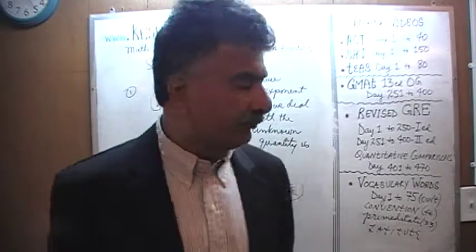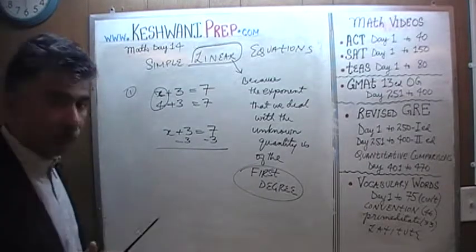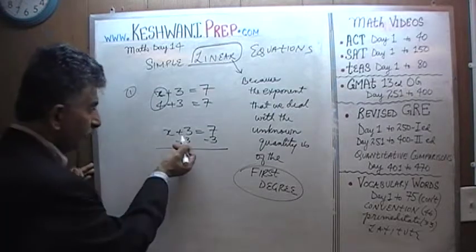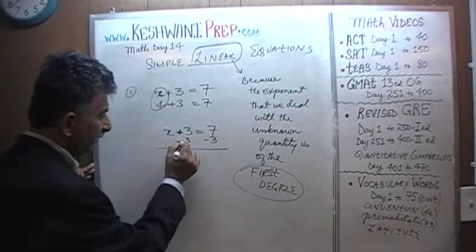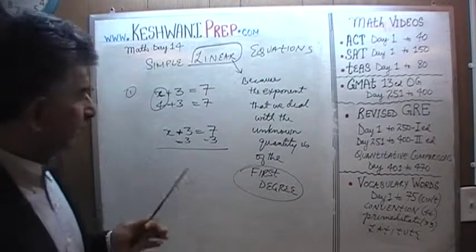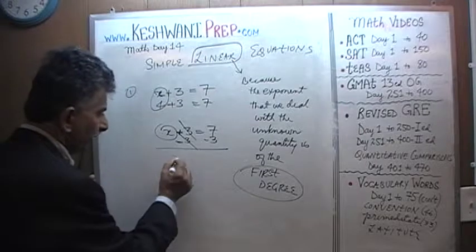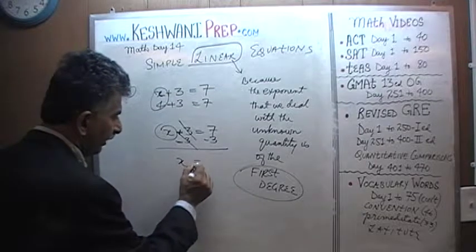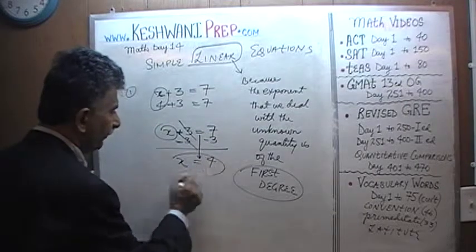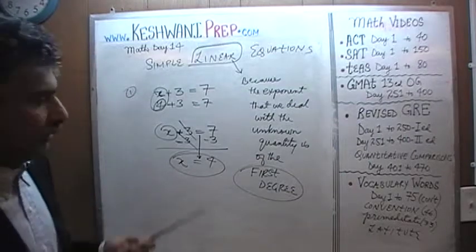We subtracted 3 from both sides. The point of subtracting 3 from this side is to get rid of this 3. We have positive 3 and negative 3 — they are going to cancel each other out. We are left with only x on one side, and on the other side we have 7 minus 3, which is 4 — exactly what we found before. We found that without all this work because it was so simple.